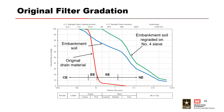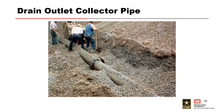For broadly graded materials prone to internal instability, the design of the filter should have been based on the mobile fraction of the base material rather than the total fraction. Had the filter design taken into account the internal instability of the base soil, this incident may have been avoided. The maximum D15 of the filter of the drain should have been less than 0.7 millimeters. The drain outlet collector pipe was a perforated corrugated metal pipe surrounded by coarse drain material.